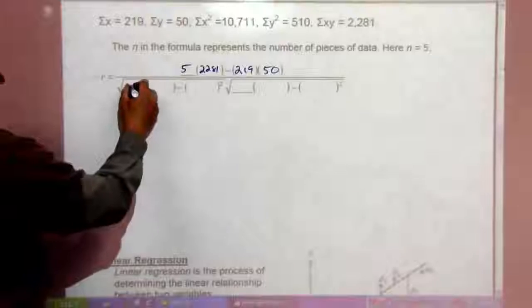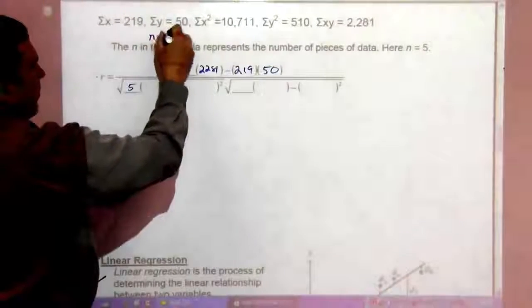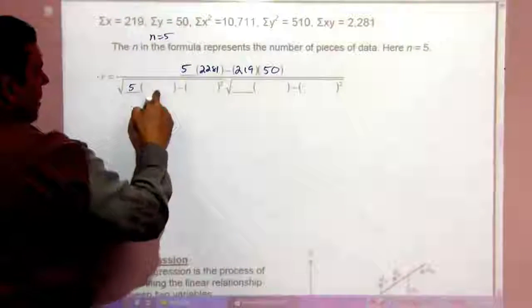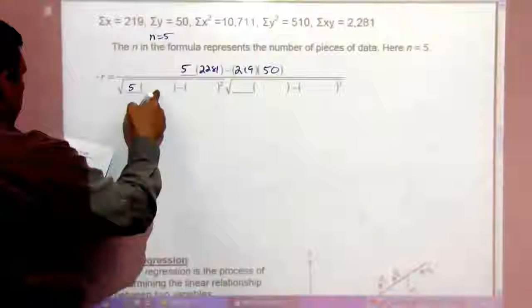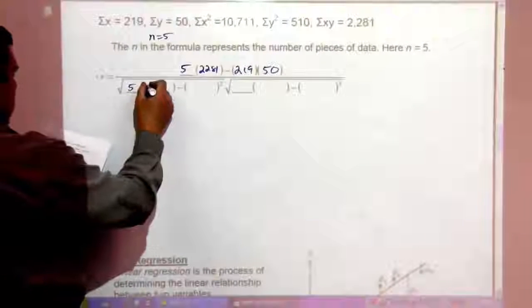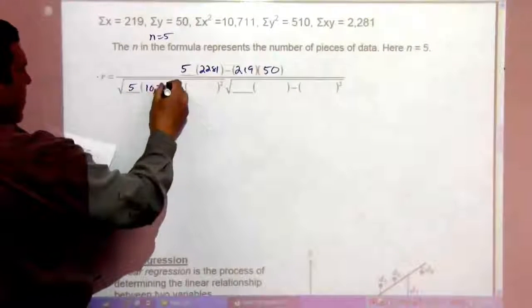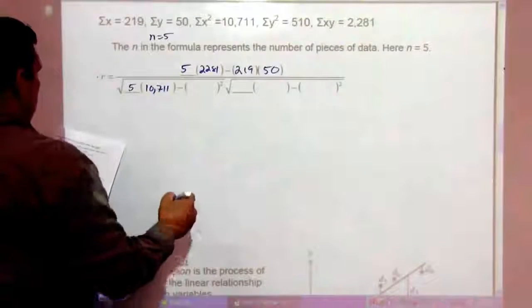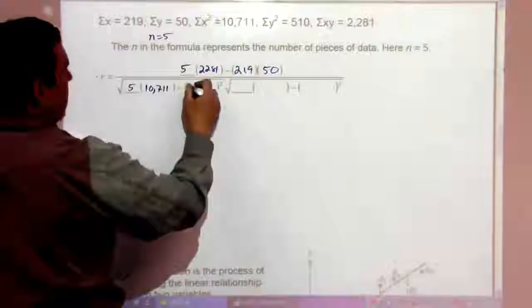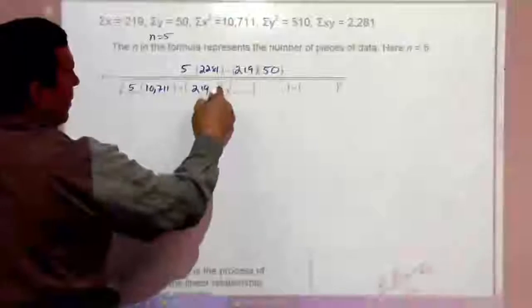Then we have N again, N is 5. Then this is going to be the sum of the X squareds. That's 10,711 minus the sum of the X's here, and they get to be squared.